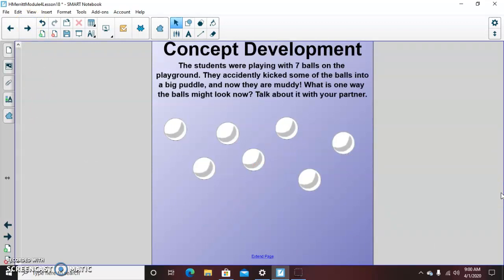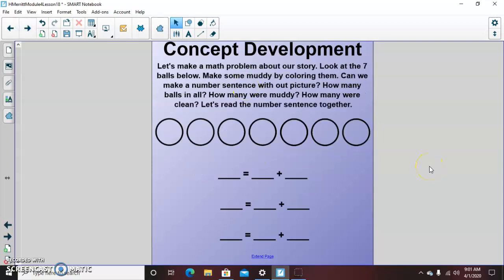Here's our first story. I want you to listen first. Put down your paper, pencil, or your whiteboard. It says, the students were playing with seven balls on the playground. They accidentally kicked some of the balls into a big puddle. And now they are muddy. What is one way the balls might look now? If you have mom or dad or grandma and grandpa or a big sister or a big brother or a cousin, anyone at home, you can turn and talk to them about what you think maybe our picture would look like.